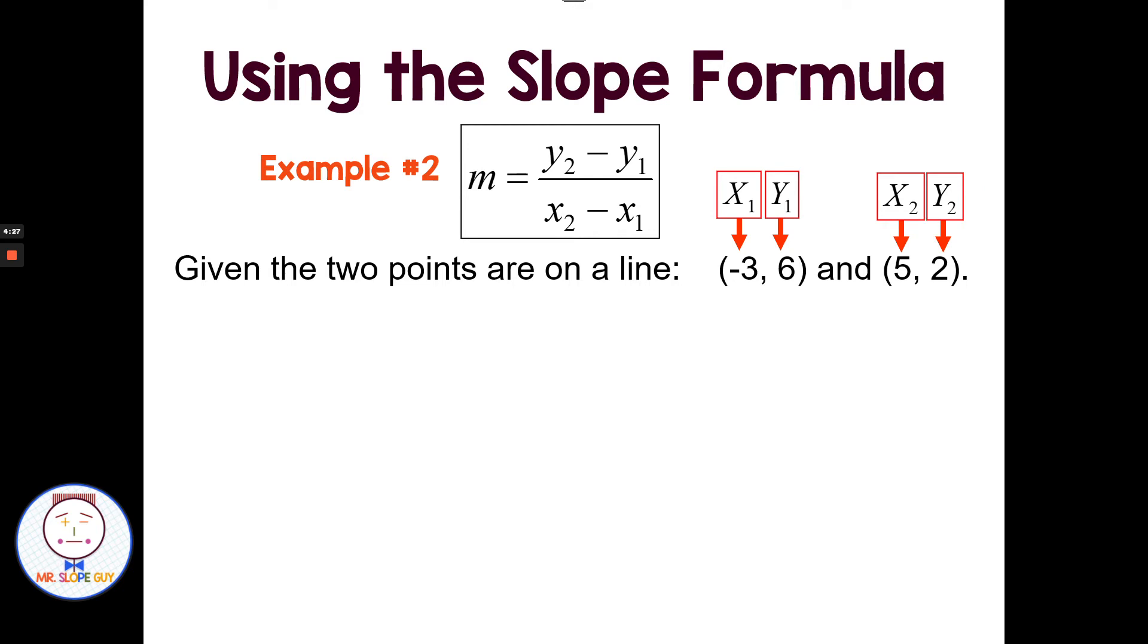Then back to my same formula. Remember the y's are always on top. If you get the y's on the bottom, it will never come out correctly. So make sure you get the y's on the top. That rise, the up or down part, y's are on the top, and x's are always on the bottom. So m equals, and we're going to substitute, y sub 2 is 2, minus from the formula, then y sub 1 is 6, over x sub 2 of 5, minus x sub 1 of -3.